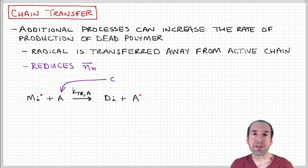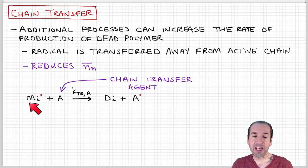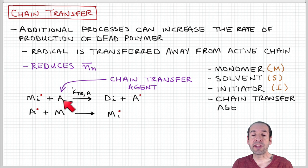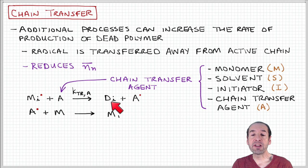Now we can think about the mechanism of this process by adding an additional step. So here you have a growing chain of length I and it reacts with a chain transfer agent that I'm denoting with A, and that produces a dead polymer of length I and the radical, free radical that was associated with the active chain is now transferred to the chain transfer agent. Then this chain transfer agent becomes available again to transfer its radical back to a monomer and start the process all over again by initiating another growing or active polymer chain.